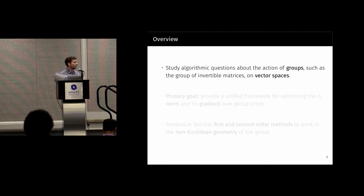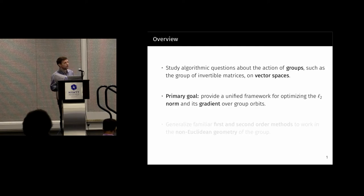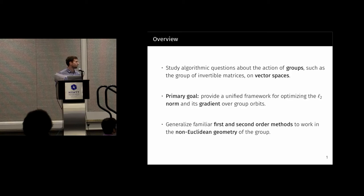We're going to be studying actions of groups, such as the invertible matrices GL_N, on vector spaces. In particular, we're going to be talking about optimizing the norm of a vector over the group orbit and also its gradient. We're going to generalize some very familiar methods from optimization to work in this setting in which we don't have Euclidean geometry.